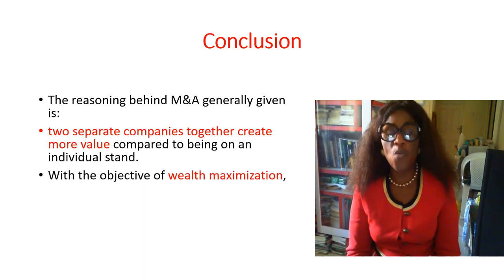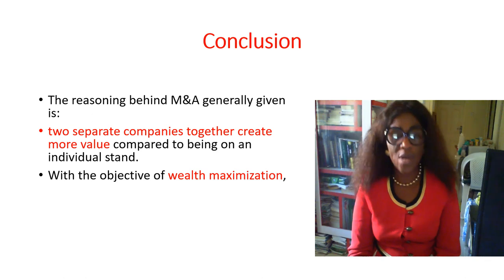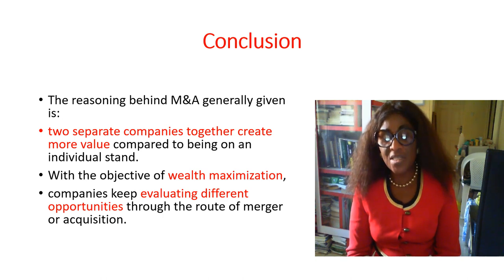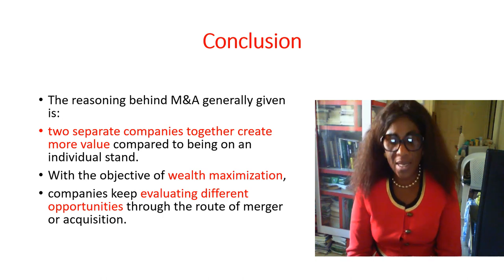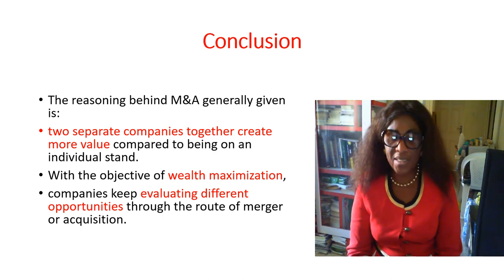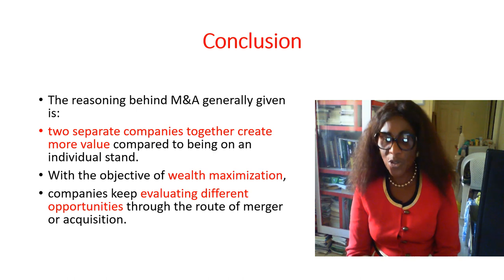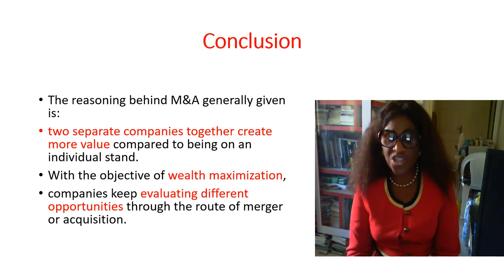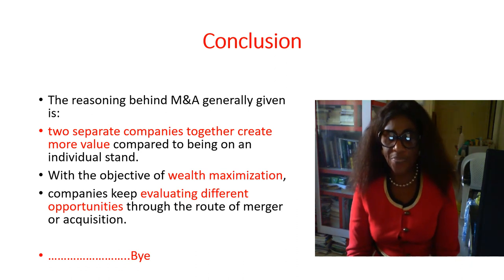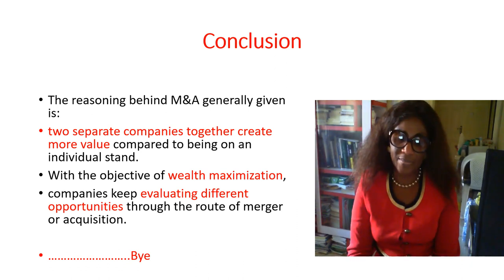With the objective of wealth maximization, when they put their resources together they have more resources than they could have had under one management. Companies also keep evaluating different opportunities; when they pull together, the opportunities that the individual companies had will still exist, and the combined opportunities will still exist. So there is real growth when two companies merge into one or even when a company acquires another.